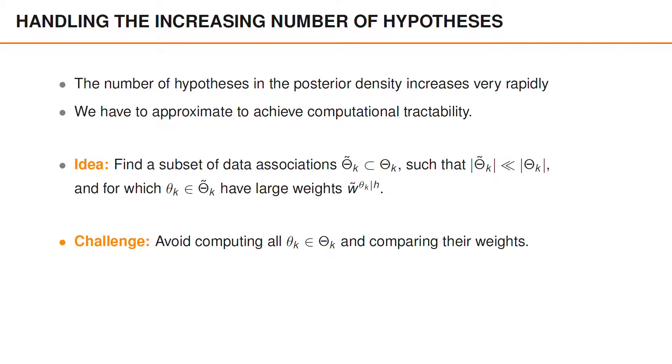One way to figure out which subset of data associations have large weights is to compute the weight for every possible data association. Now doing so, we would like to avoid computing all possible data associations, because doing that would have a much too high computational cost.